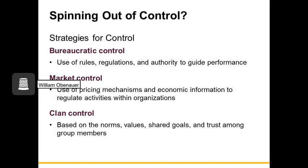We're going to talk about three different strategies for control. The first is bureaucratic control — the use of rules, regulations, and authority to guide performance. Then market control, where we use pricing mechanisms and economic information to regulate activities. And finally clan control, which is based upon the norms, values, shared goals, and trust among group members used to control activities and behaviors within the organization.